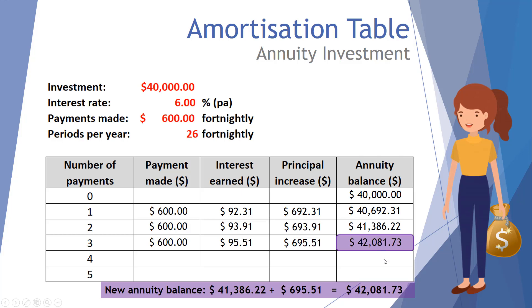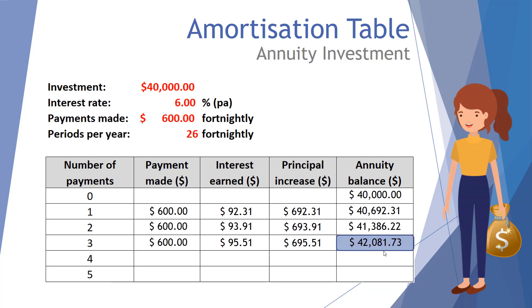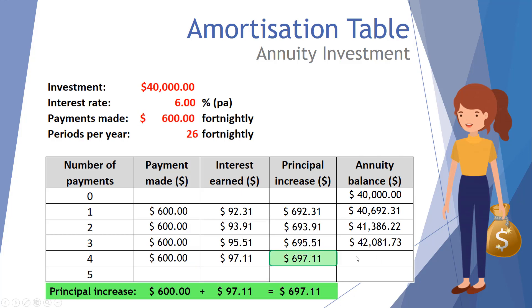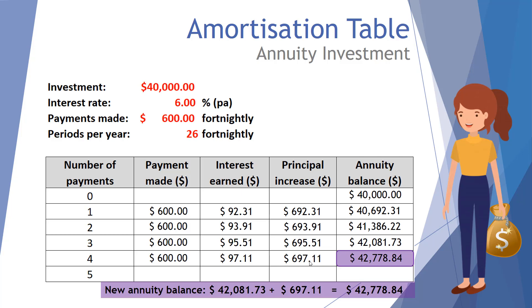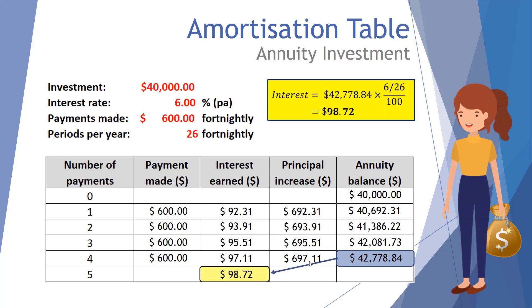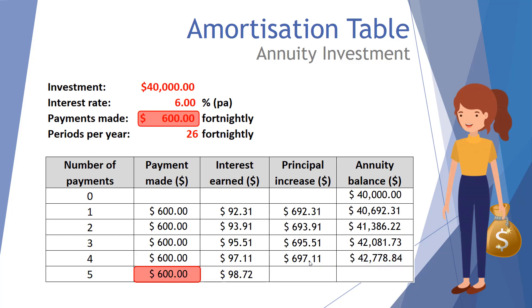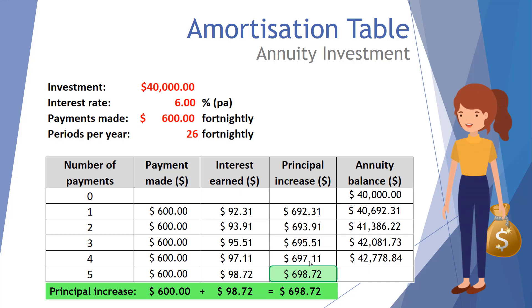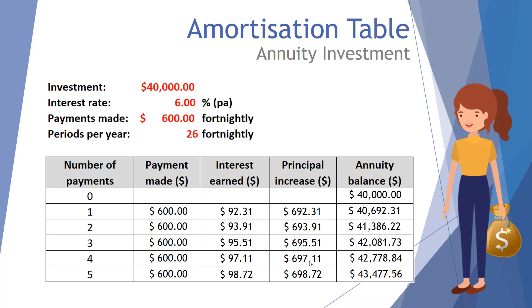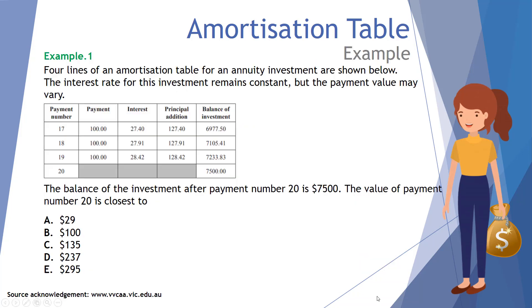Adding $695.51 to the previous balance returns a new balance of $42,081.73 after three payments. We calculate interest from that balance: $97.11. Adding the fourth payment of $600 gives a principal increase of $697.11, producing an annuity balance of $42,778.84. For the fifth payment, interest earned is $98.72, the payment is $600, principal increases by $698.72, and our annuity balance after five fortnightly payments is $43,477.56. That completes our five-period amortization table.